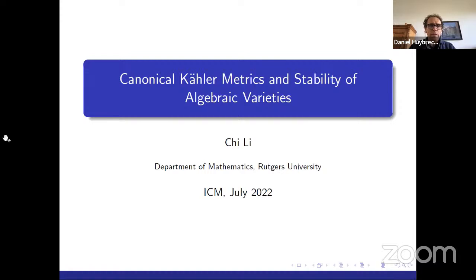Welcome, everyone. My name is Daniel Heubritz from Bonn University. I'm chairing the section on Algebraic and Complex Geometry this afternoon and have the great pleasure to announce Shi Li from Rutgers University. Shi Li has made important contributions to his area of expertise, which includes K-stability, Kähler metrics with special curvature properties, and moduli spaces of Fano manifolds. He will deliver his talk from Copenhagen. Please use the Discord server for questions. The title of his talk is Canonical Kähler Metrics and Stability of Algebraic Varieties.